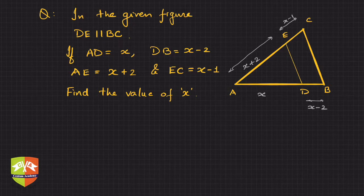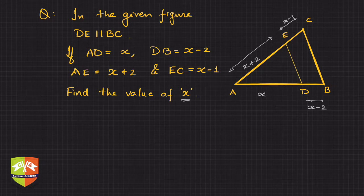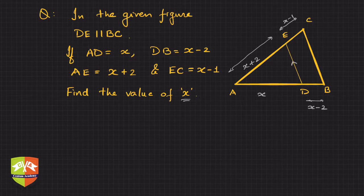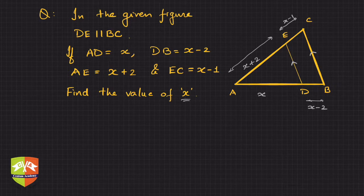You have to find x. Now the moment you see such a problem — and many questions would not have diagrams — you have to draw it properly. Once you have the diagram in front of you and you see things like DE parallel to BC in a triangle, the first thing which should come in your mind is Thales theorem or Basic Proportionality Theorem.